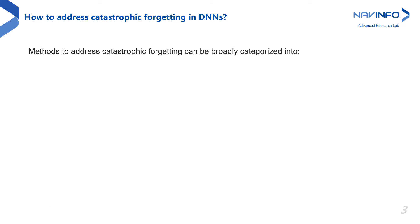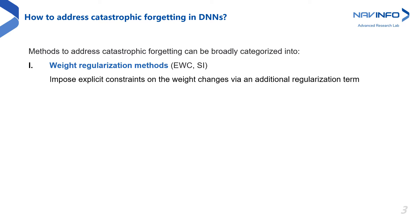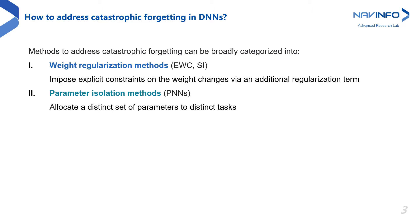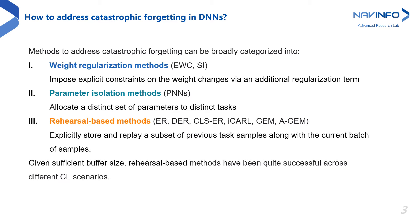There are three broad categories of continual learning methods that partially address catastrophic forgetting. Weight regularization methods estimate parameter importance and impose a penalty on weight changes using a regularization term. Parameter isolation methods allocate a distinct set of parameters for each task, either within a fixed capacity or by adding new modules for each task. The final category is rehearsal-based methods, which make use of a memory buffer and explicitly store raw examples with their ground truth labels. During subsequent task training, these stored samples are interleaved with the current task samples.